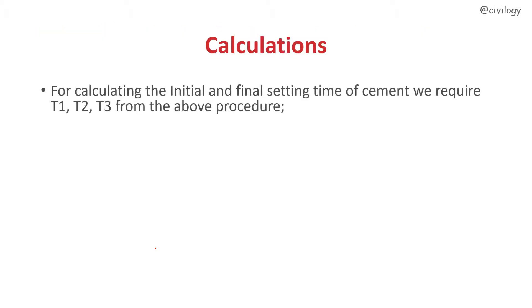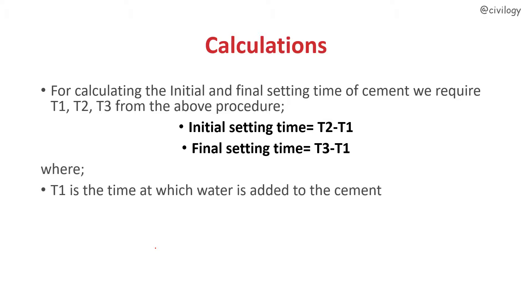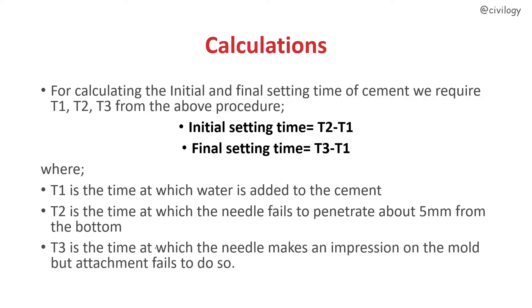For calculating initial and final setting time of cement, we require T1, T2, and T3. Initial setting time equals T2 minus T1, and final setting time equals T3 minus T1. T1 is the time at which water is added to the cement. T2 is the time at which the needle fails to penetrate about 5 mm from the bottom — this is the initial setting time. T3 is the time at which the needle makes an impression on the mold but the attachment fails to do so — this is the final setting time.